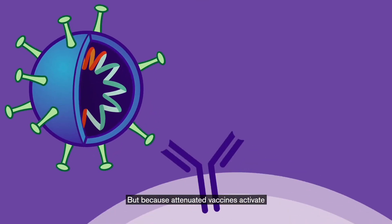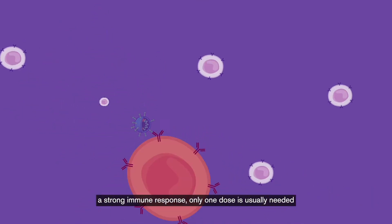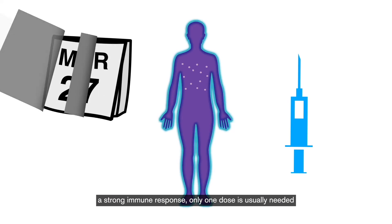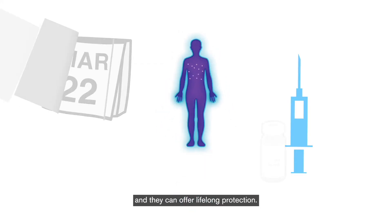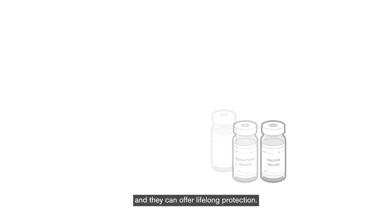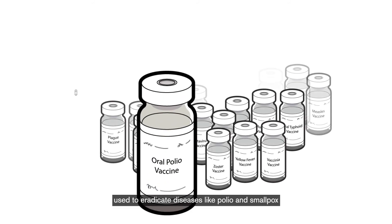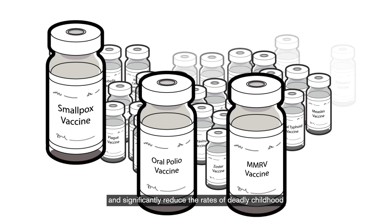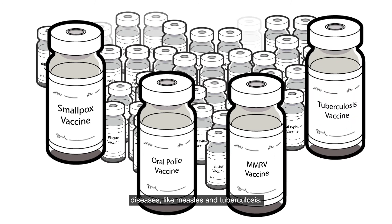But because attenuated vaccines activate a strong immune response, only one dose is usually needed, and they can offer lifelong protection. Attenuated vaccines have now been used to eradicate diseases like polio and smallpox, and have significantly reduced the rates of deadly childhood diseases like measles and tuberculosis.